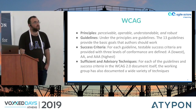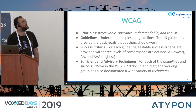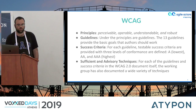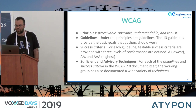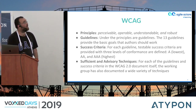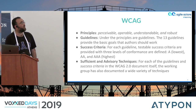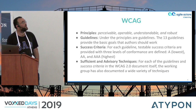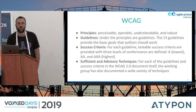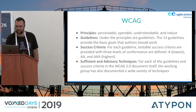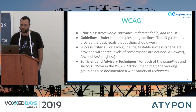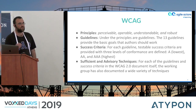The basic principles according to the standard are that elements must be perceivable, operable, understandable, and robust. All of these principles fall under some guidelines — there are about 13 guidelines that provide the basic goals web developers need to follow. These guidelines also provide some success criteria.